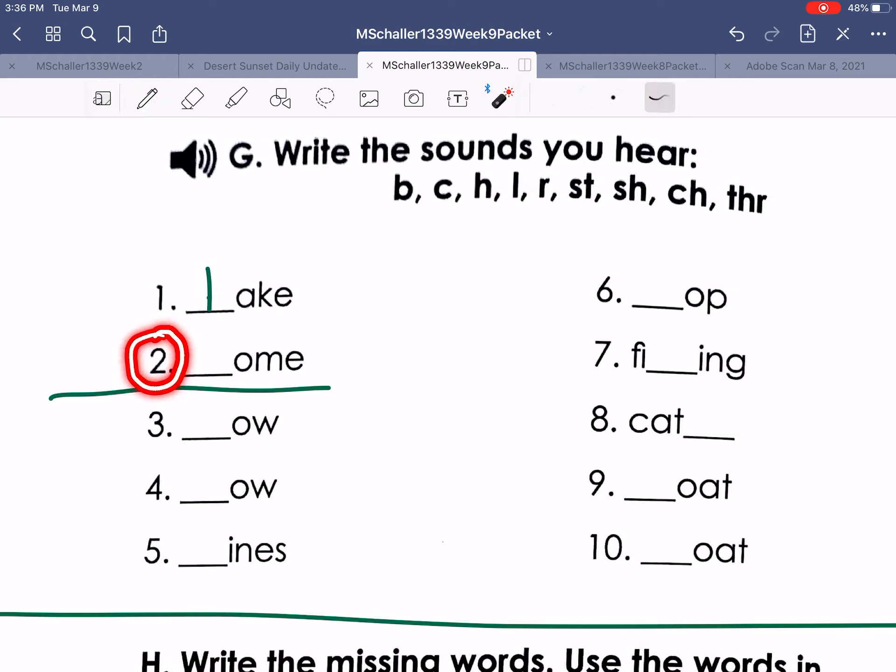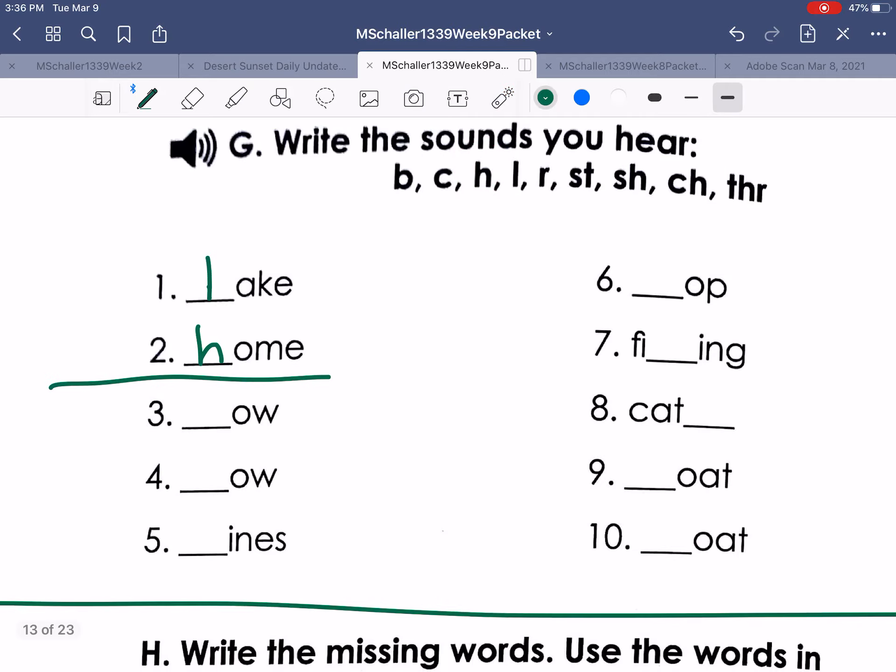Number two, home. Home. Home. Number two, home. I'm trying to make it long. So we have ohm, the missing sound. H. Is it this one? No. This one? No. This one? Yes. H. Home. Home. All right.